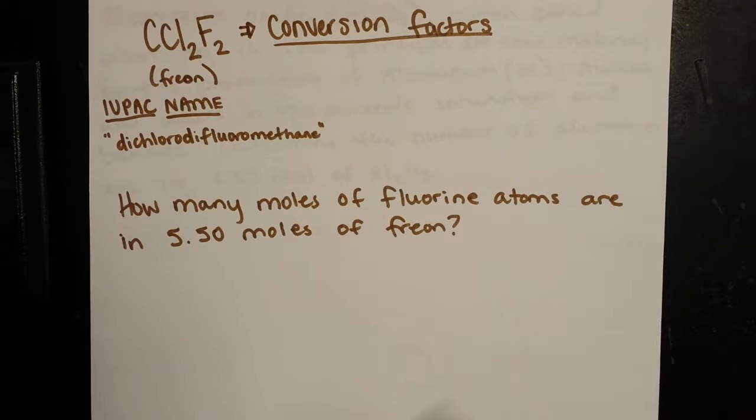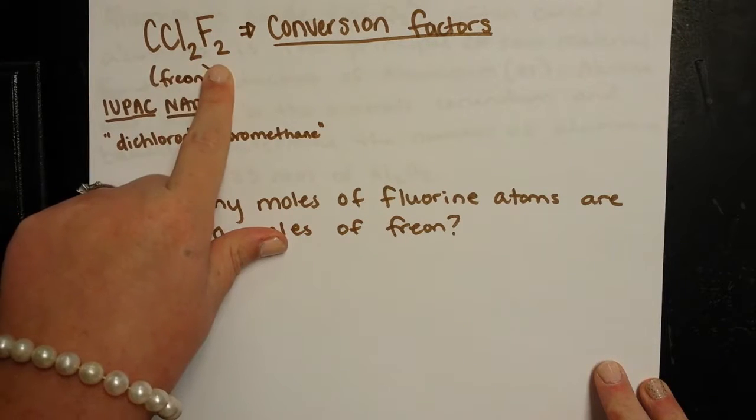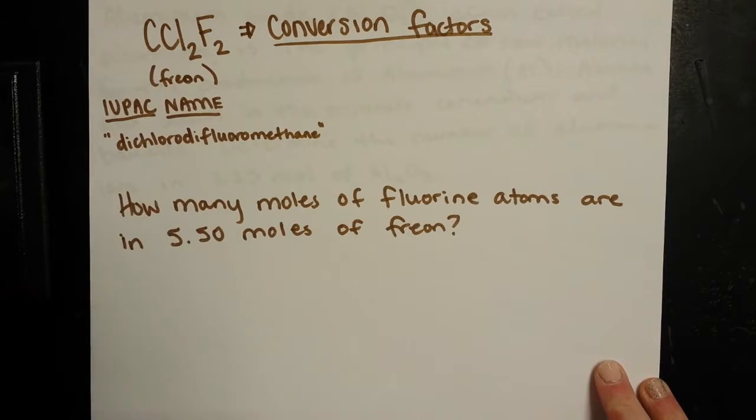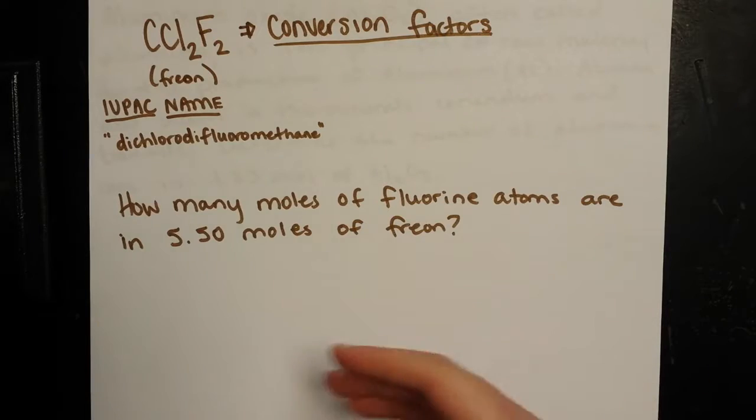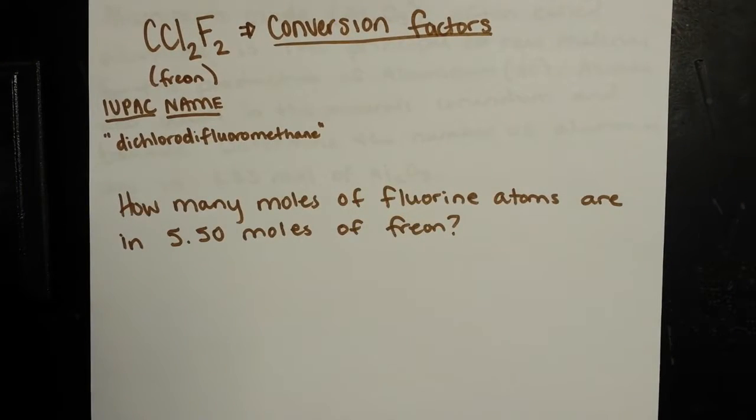So here we're going to start applying the idea of percent composition. That's something that we're going to call it later. But the idea that if I have one mole of a compound, that means that I have a certain number of moles of the elements that make up the compound, and it's related to the ratio of atoms inside of one representative particle for that compound.